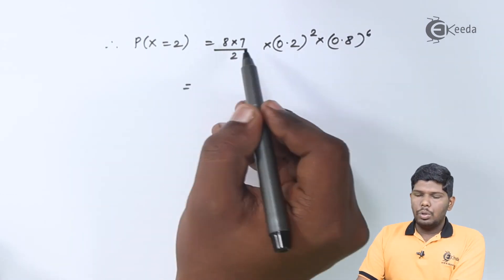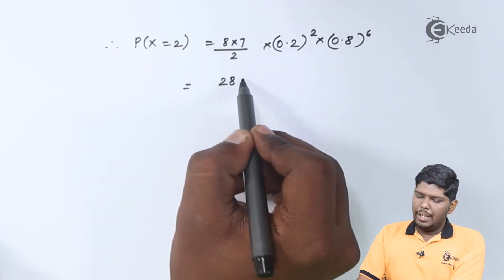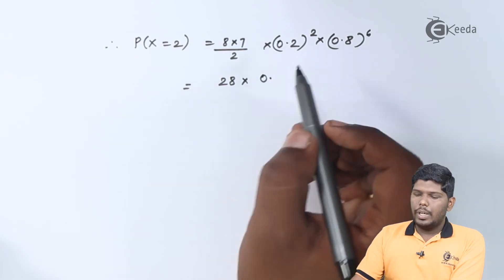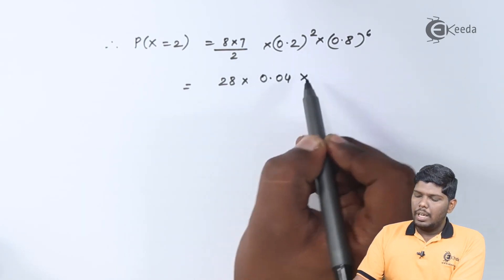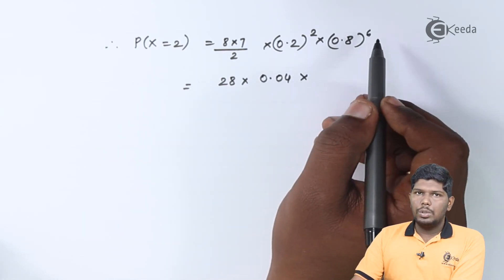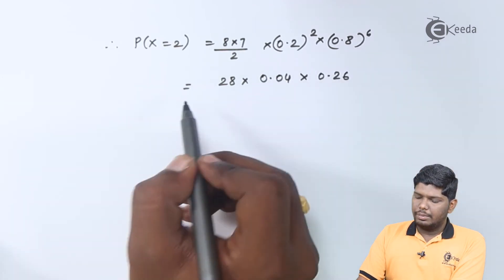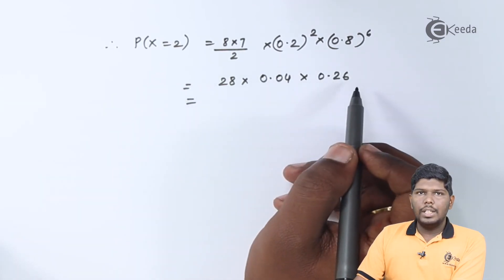Here we have 8 divided by 2 is 4, and 4 times 7 gives you 28. (0.2) squared equals 0.04, and 0.8 raised to 6 gives you 0.26. On multiplication of these three terms, the final answer will be 0.2912.